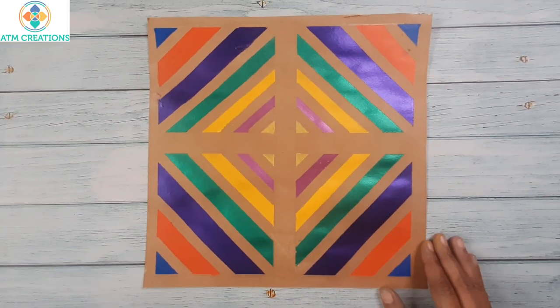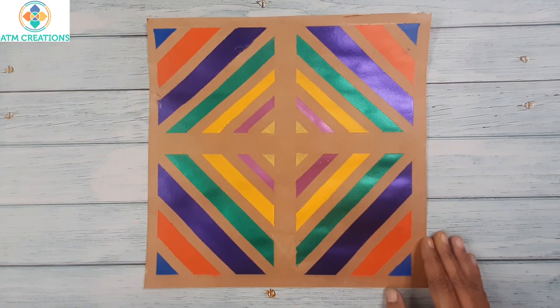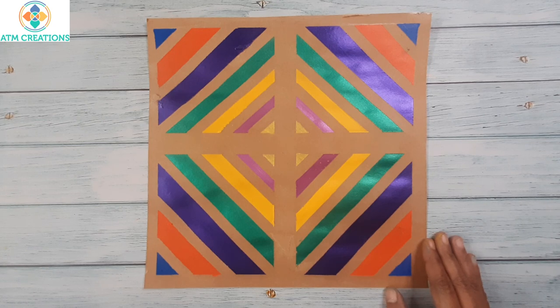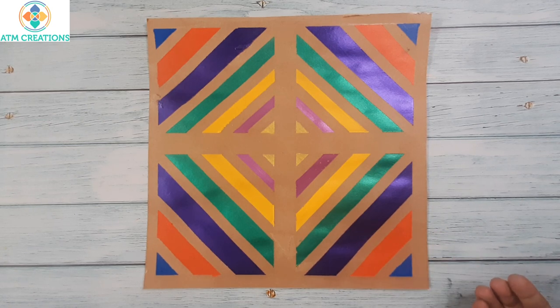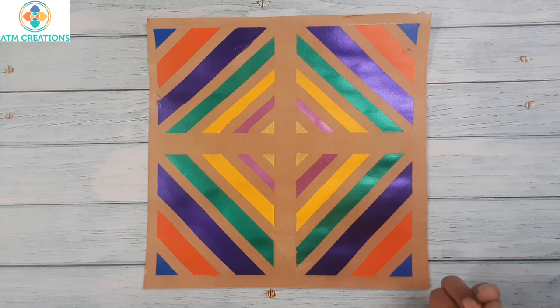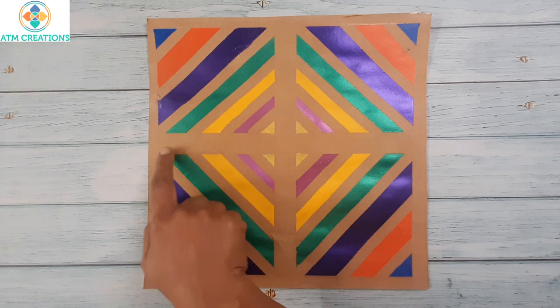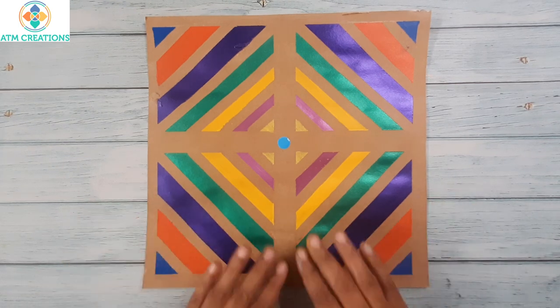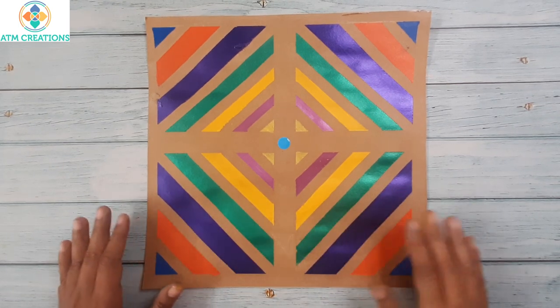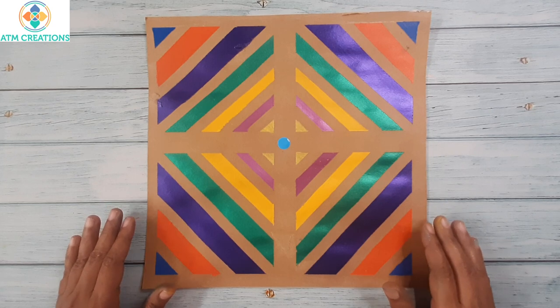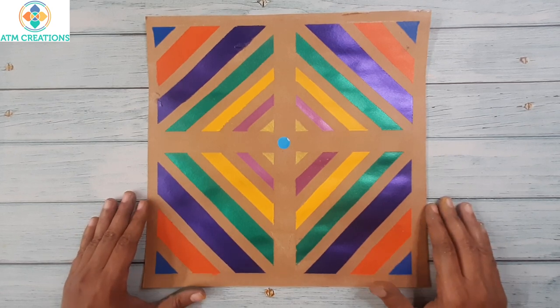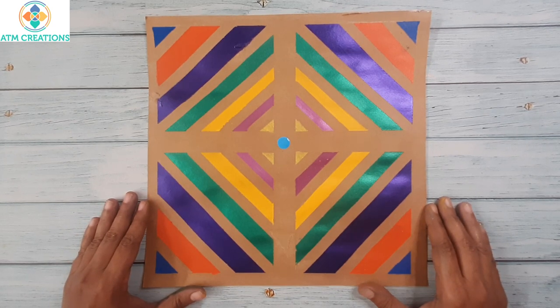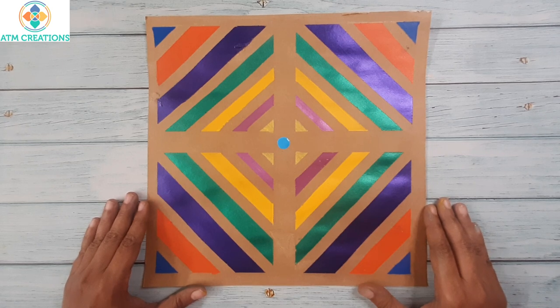I'm sure after the removal of the masking tape, this painting looks really beautiful. Now if you feel like decorating it more, probably you can place some shiny stones in between, or you can leave it as it is. So putting the masking tape, painting, and removal of the masking tape all together, it took only about two hours. I'm sure all of you love this painting. Thank you for watching this video.